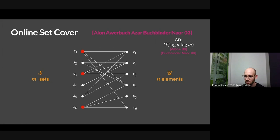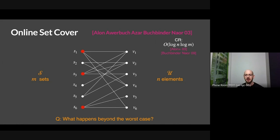The motivating question behind our work is: this is all well and good, but the model here is very pessimistic — we're assuming that the adversary is really out to get us. Are there reasonable ways to relax the adversary and go beyond the worst case and bypass this double log?